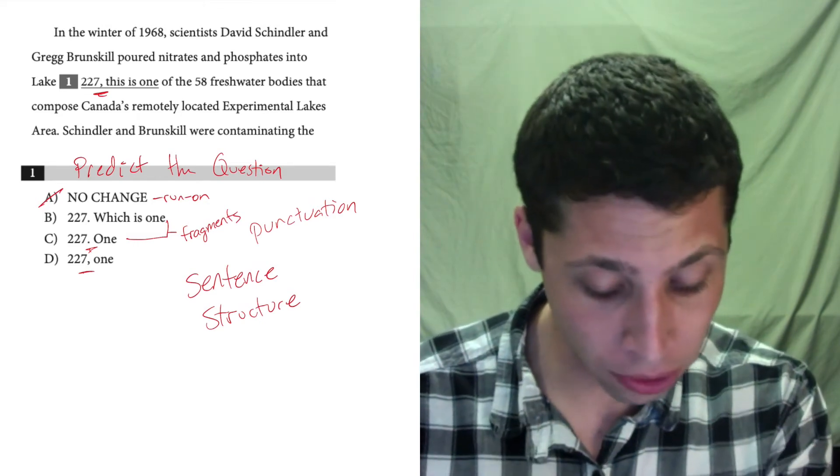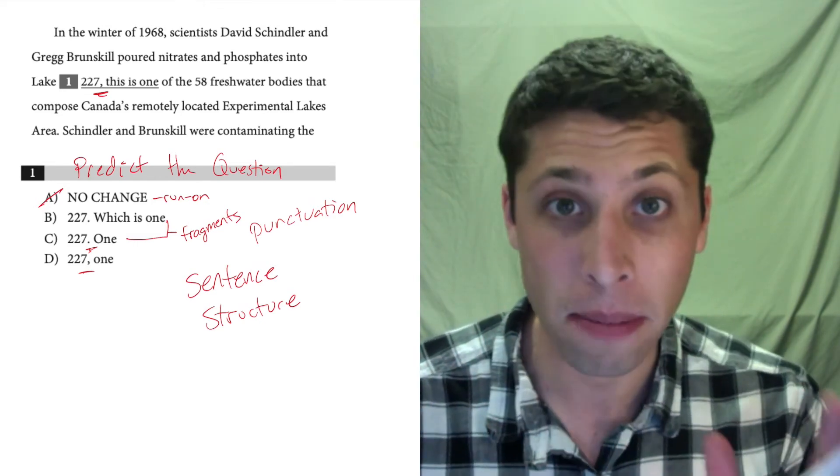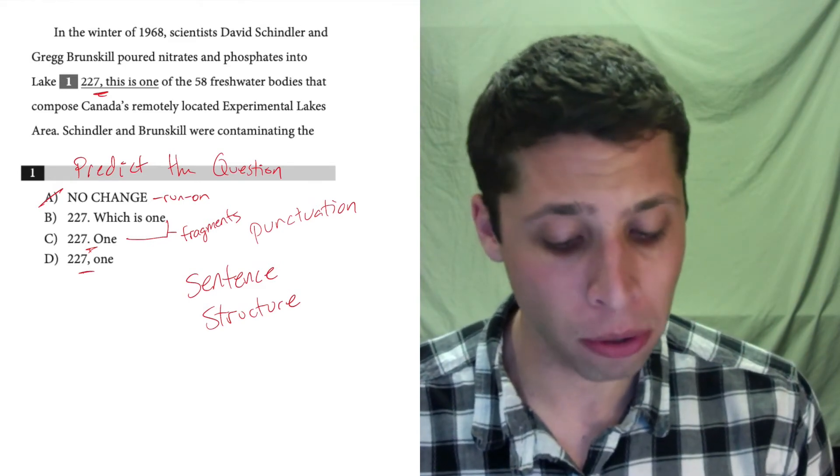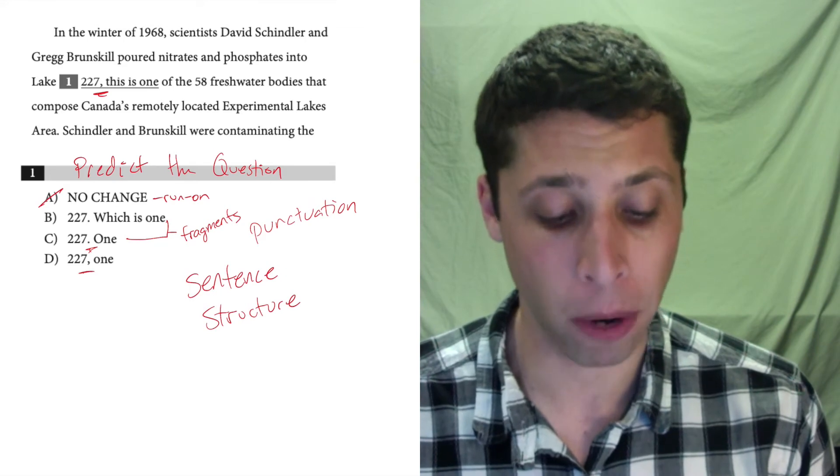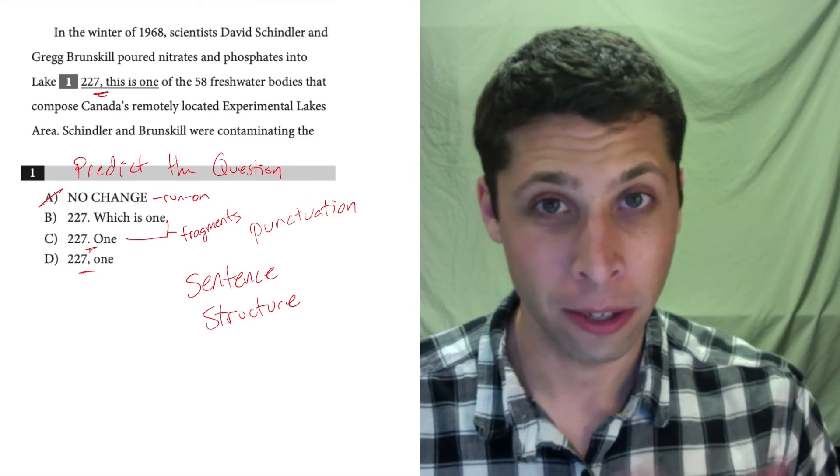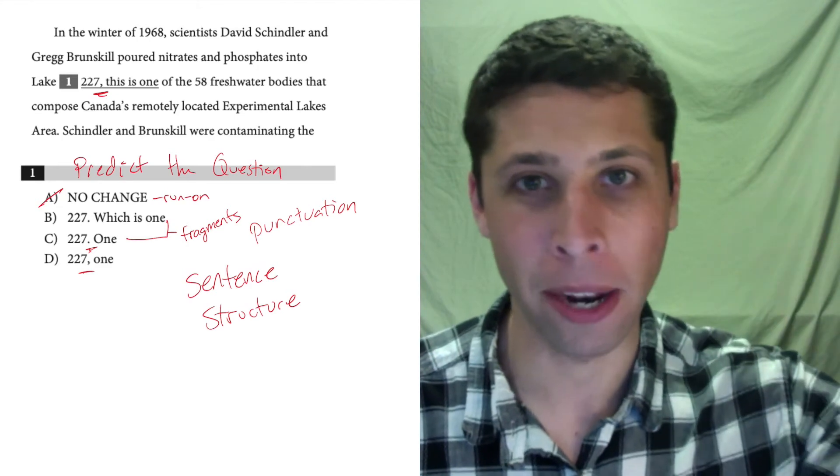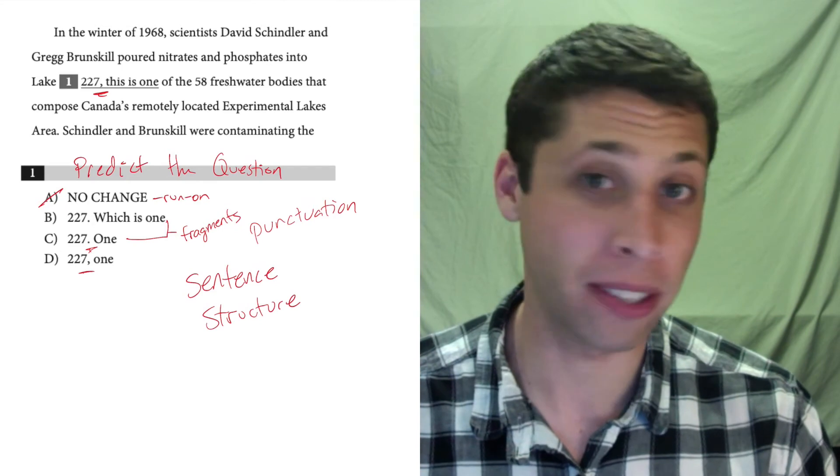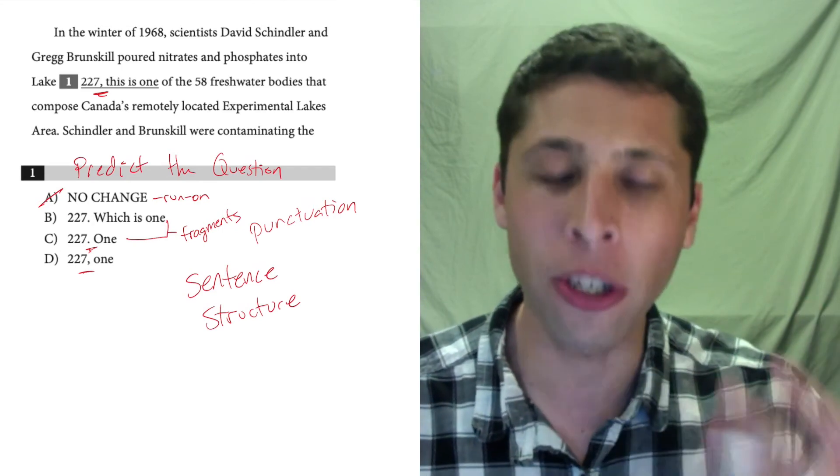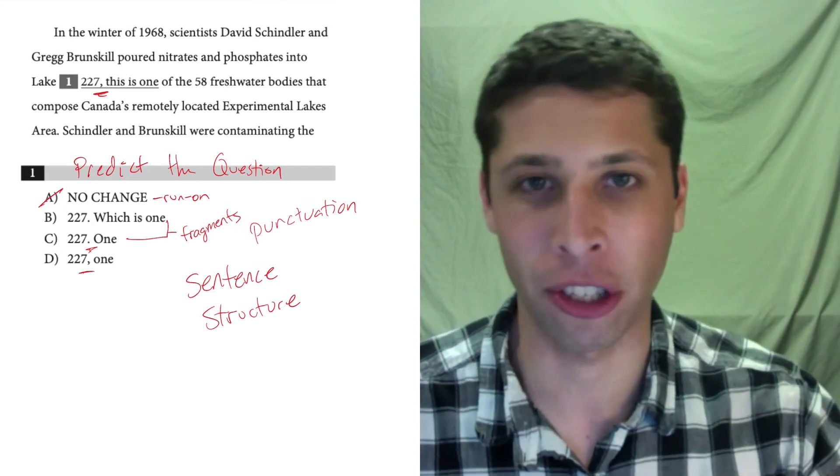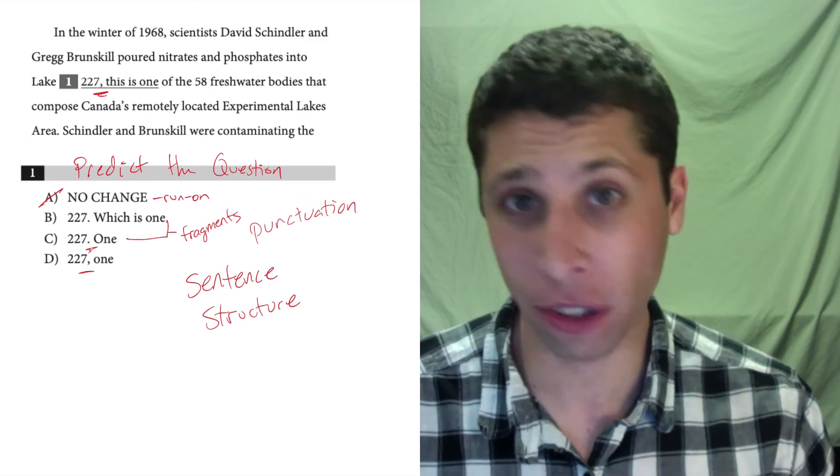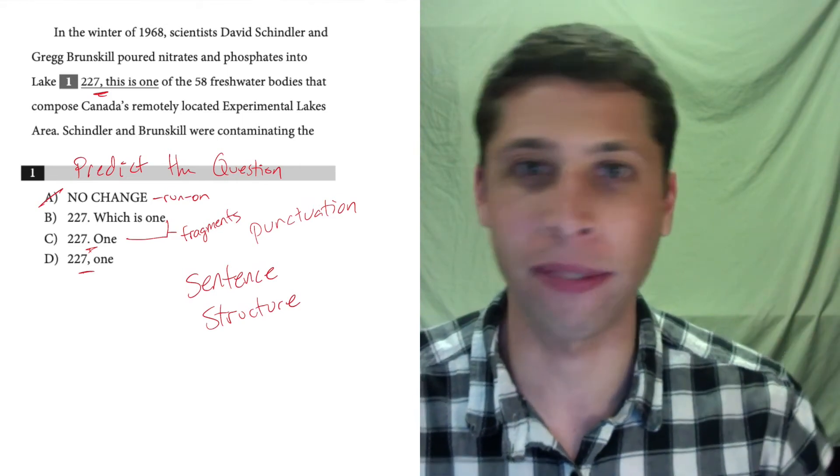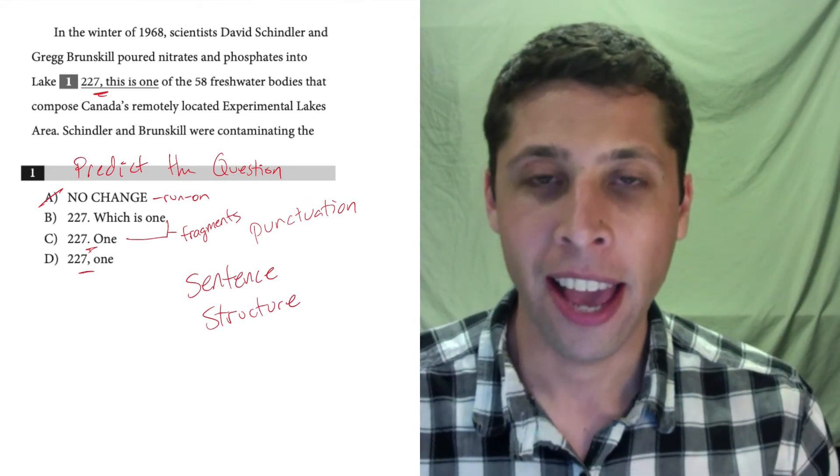If we were to start the sentence off, let's just do choice C. One of the 58 freshwater bodies that composed Canada's remotely located experimental lakes area. Notice how my voice kept going up and up and up expecting something to happen and then it didn't. The sentence just ended. That's what a fragment sounds like when you read it. Your brain is good at expecting an action, which is a required part of a sentence. There's no action here. So you just kind of keep reading and reading, expecting something to happen, and then the sentence kind of unexpectedly ends. That's not good either.